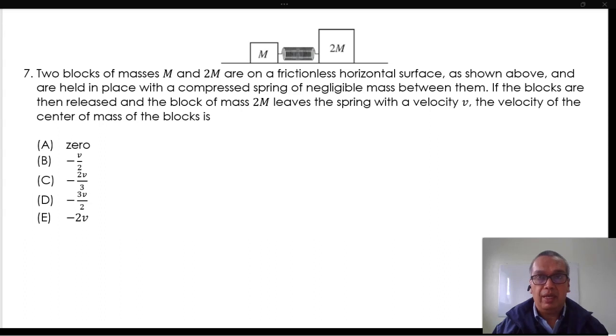Two blocks of masses m and 2m are on a frictionless horizontal surface, as shown above, and are held in place with a compressed spring of negligible mass between them. If the blocks are then released, and the block of mass 2m leaves the spring with a velocity v, the velocity of the center of mass of the blocks is...